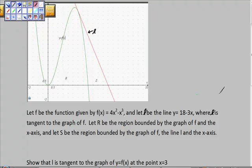And you'd have some explanation like this. Let F be the function given by F(x) equals 4x² - x³, and let L be the line y = 18 - 3x, where L is tangent to the graph of F. Let R be the region bounded by the graph of F and the x-axis, and let S be the region bounded by the graph of F, the line L, and the x-axis.